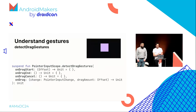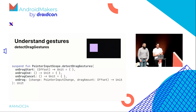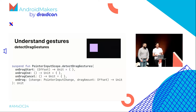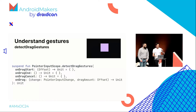A gesture is a sequence of pointer events interpreted as a single action. We have a gesture detector that waits for pointer down and touch slope in any direction, then calls the onDrag callback for each drag event. In this example, we have four callbacks: onDragStart, onDragEnd, when it's cancelled, and of course onDrag.